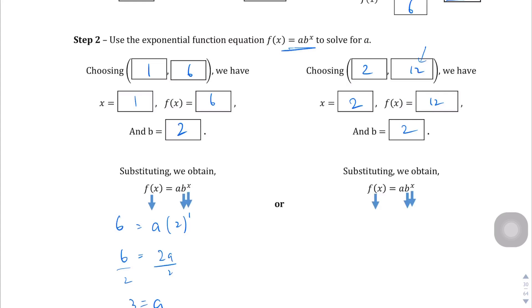And b, again, is 2. And so if we plug this in, f of x is 12 equals a times 2 to the power of 2. So 12 equals 4a divided by 4. 3 equals a. And which is what we got for the other one. I told you that you should come out with the same answer here for a.